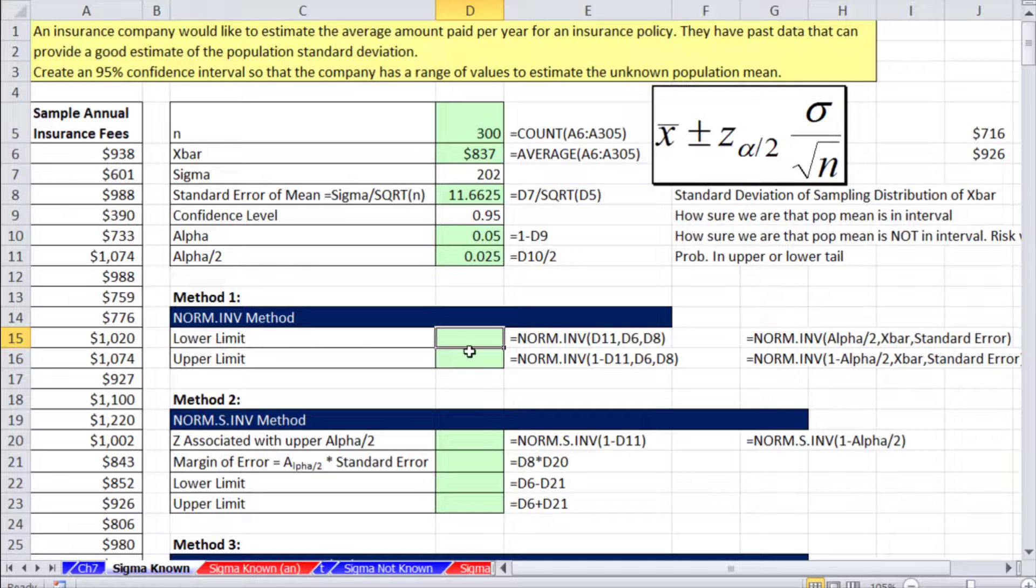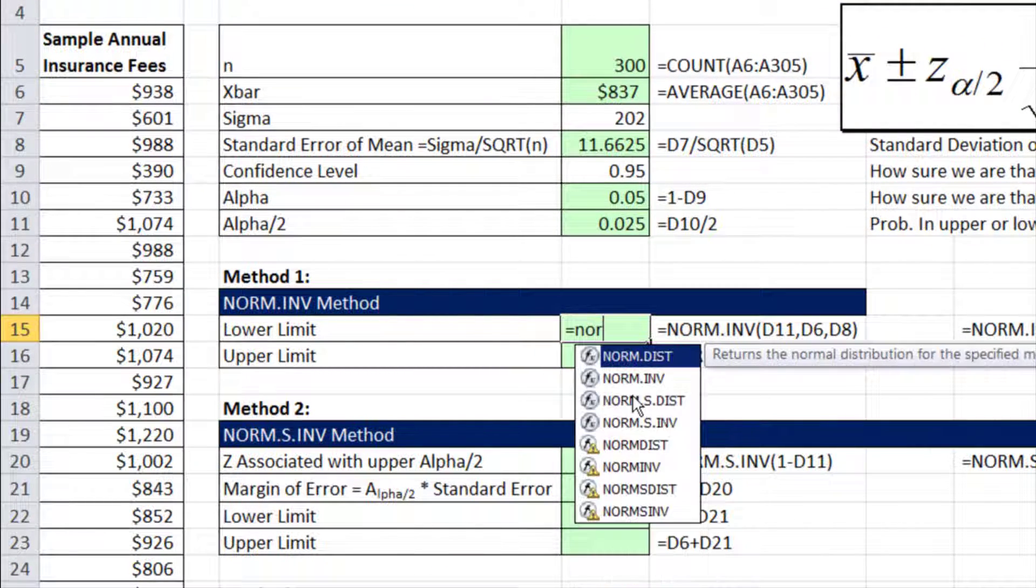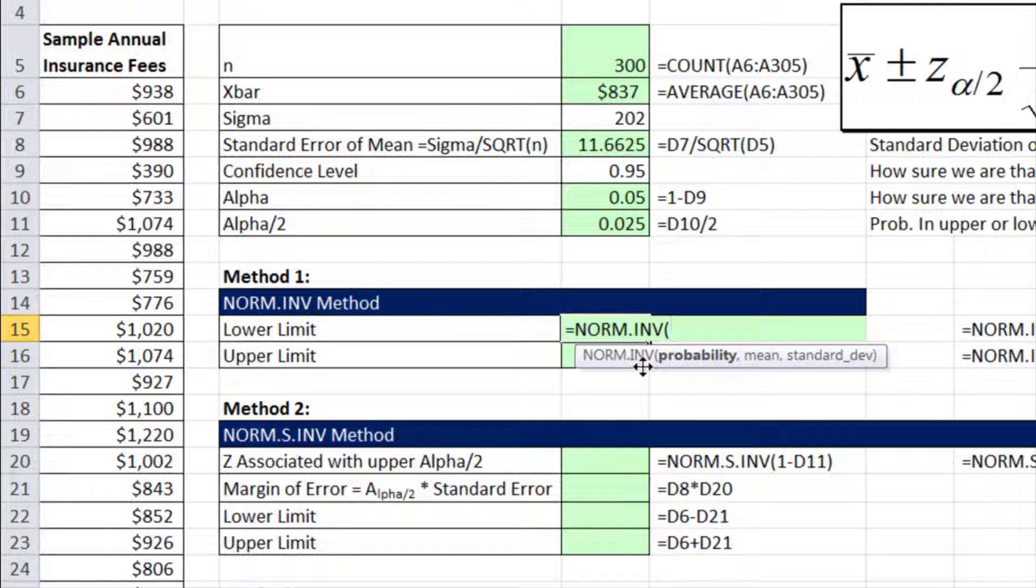Method 1, we're going to see NORM.INV. The great thing about NORM.INV is we can directly calculate the lower limit and upper limit. It will calculate the two values, the upper, which is the plus, and the lower, which is the minus. So it wants the probability. On the low end, all these functions work from negative infinity up to the x-bar value or the probability. We need to tell it the mean, we've calculated x̄ there, and our standard deviation, the standard error.